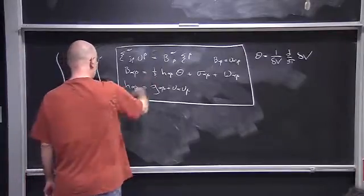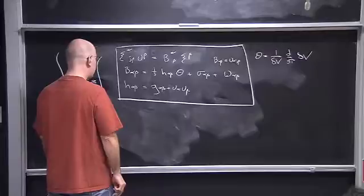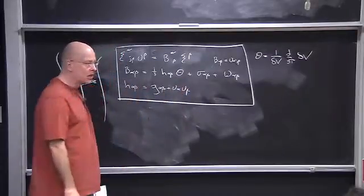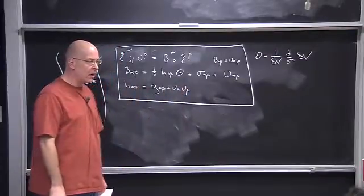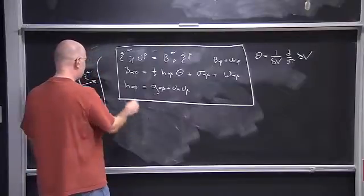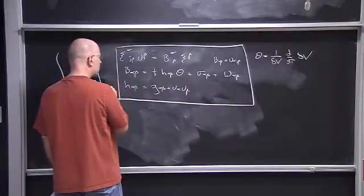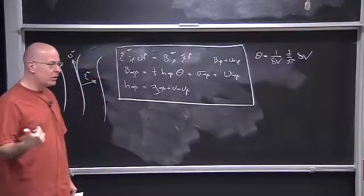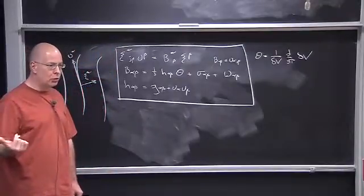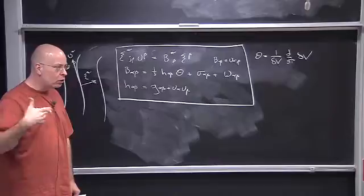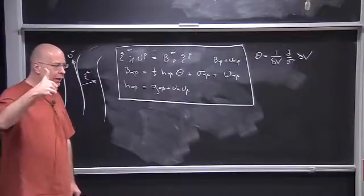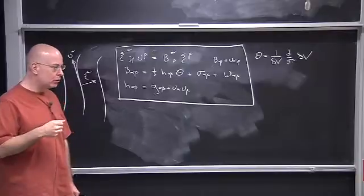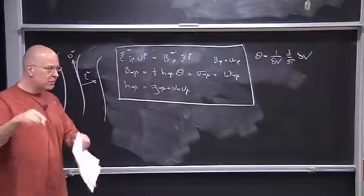We talked about the decomposition of the metric into a longitudinal piece and a transverse piece. This tensor, and this vector, are all purely spatial in the sense of having no component along u. Therefore, in a local Lorentz frame aligned with u, we would find that those tensors only have spatial components — literally spatial components.